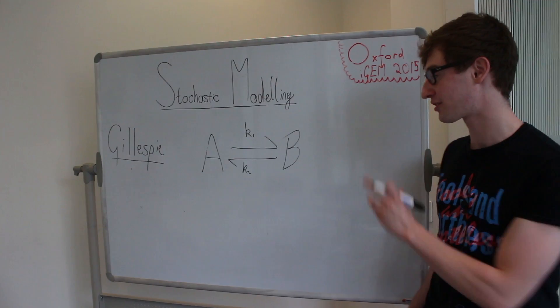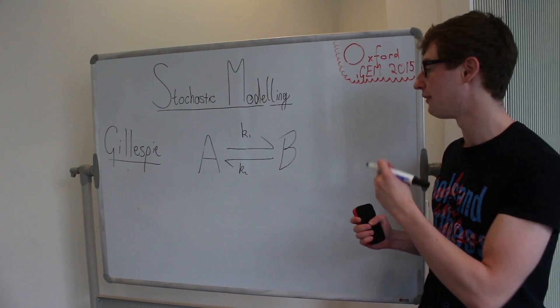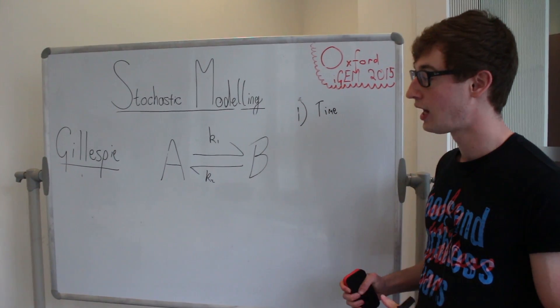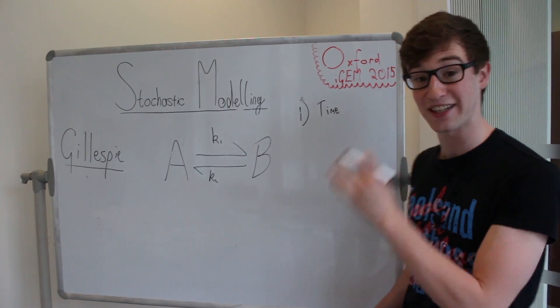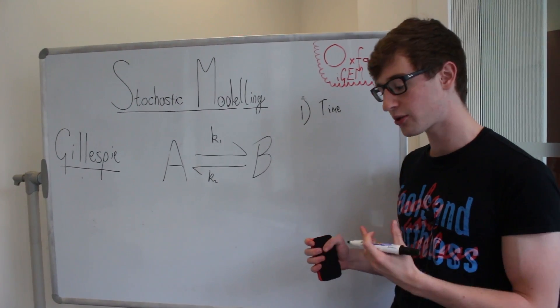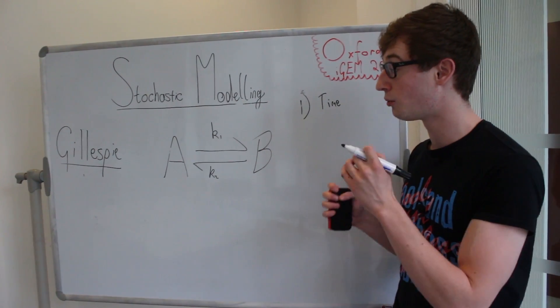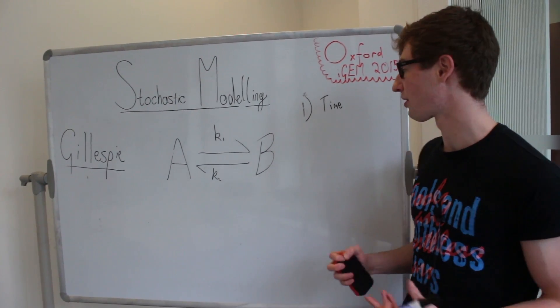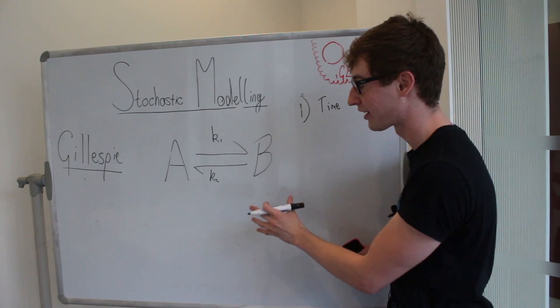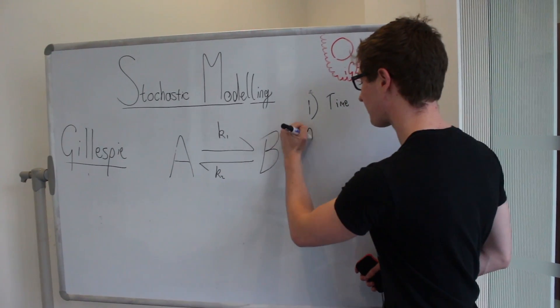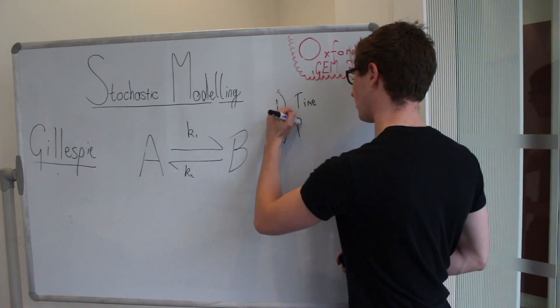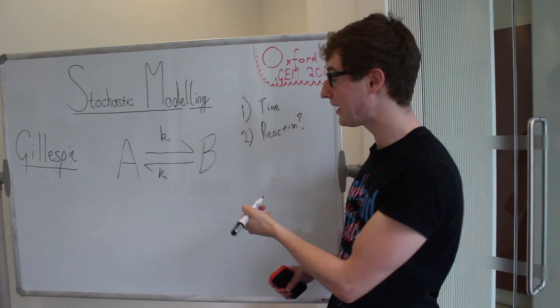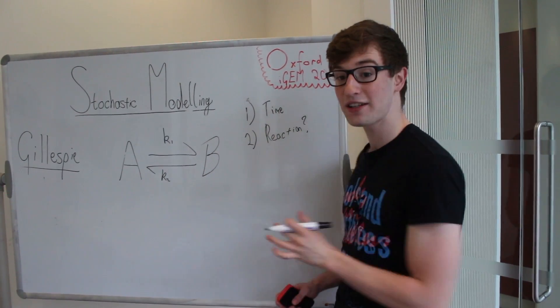So the Gillespie algorithm tells us two things at each step we choose to evolve our system. It tells us the amount of time we have to wait before a reaction happens. In our first case we were talking about with the position and the random number, we decided on a time step delta t at which we add a random perturbation to our system. But that's not what actually happens and so we want to try and get a good estimation for how long it's going to take before the next reaction occurs. And the second thing the Gillespie algorithm tells us is which reaction has occurred in that time. In this system either A can transform to become B or B can react to become A.